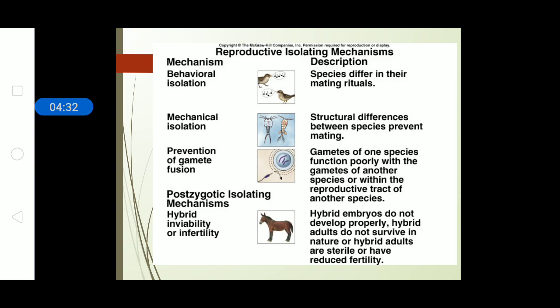Another mechanism is prevention of gamete fusion. The sperm and ovum of two animals need to fuse, but in certain cases the sperm, after entering the body of the female, is not able to survive or is damaged in the process of reaching the ovum, so the gamete is not able to fertilize.